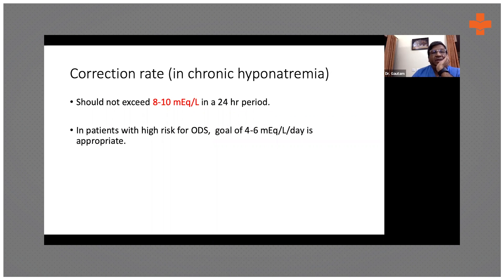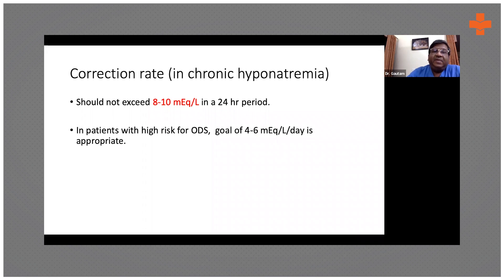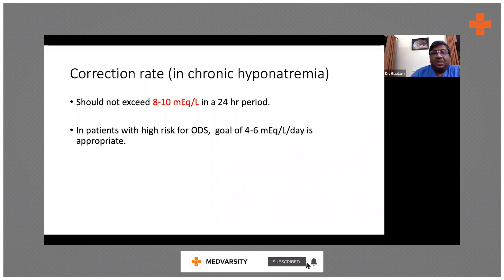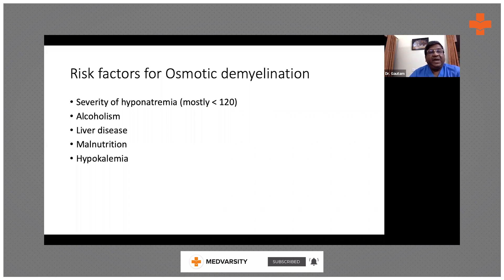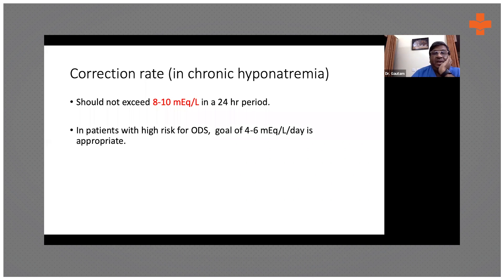In patients with chronic hyponatremia, you should not exceed 8 to 10 milliequivalents in the 24-hour period. Some books say only 8 milliequivalents. In patients who have all the risk factors, you should be even more careful, and the goal would be even less — like 5 milliequivalents.